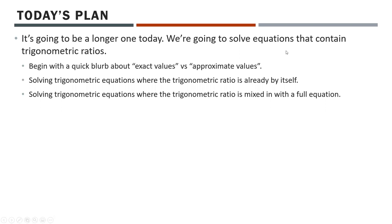Today's plan — it is going to be a longer one. We're going to solve equations that contain trig ratios. We'll begin with a quick blurb about exact values versus approximate values. We'll solve trig equations where the trig ratio is already by itself, and then I'll show you how to solve trig equations where the trigonometric ratio is mixed in with a full equation. There's going to be an absolute metric ton of examples. The more examples you see, generally speaking, the more sense it should make. A couple of these examples I'll expect you to pause the video and try on your own.